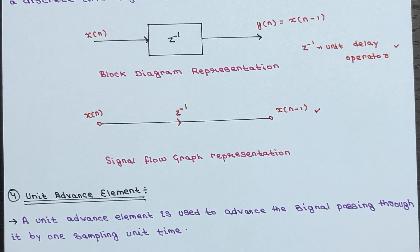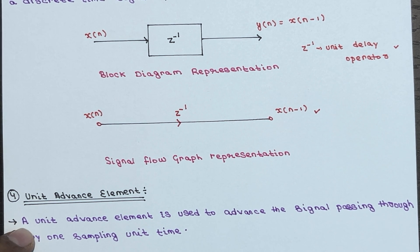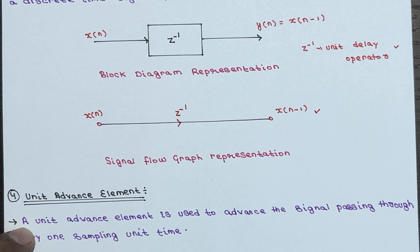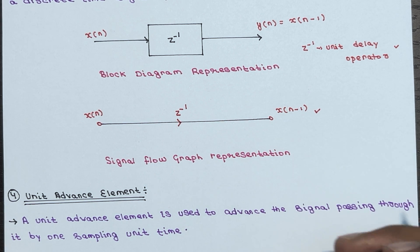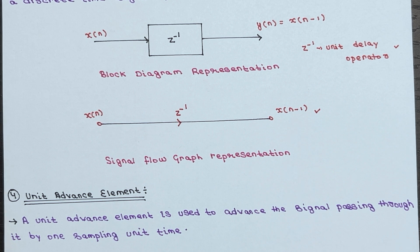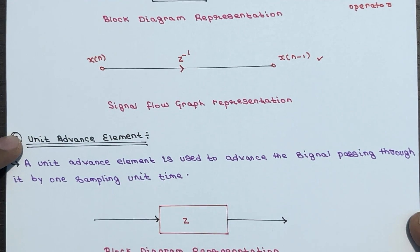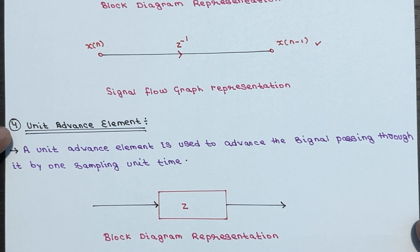Lastly, we have the unit advance element. This element advances the signal passing through it by one sampling unit — it's the opposite of the unit delay element and is another important component in discrete time systems.